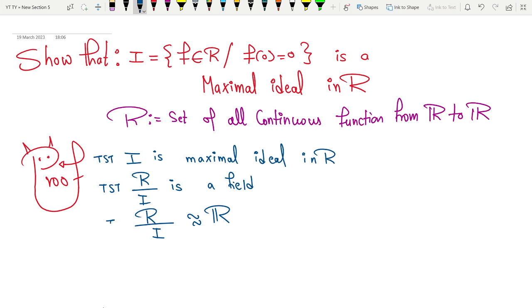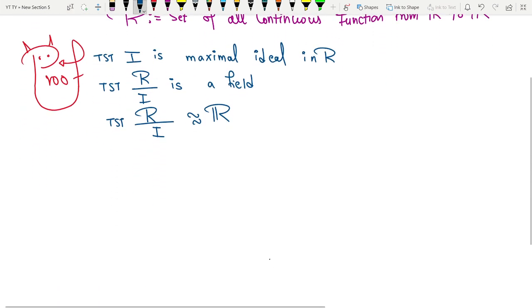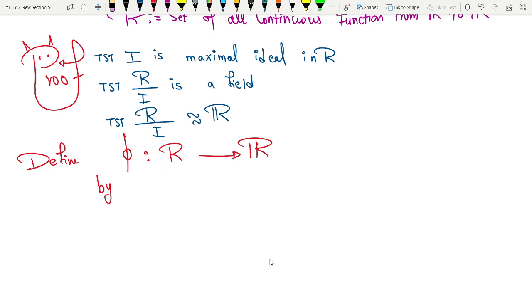For that I will show this. Now as soon as I see this, the first isomorphism theorem strikes my head. I will define a map φ from R to ℝ (not f because we are using f inside). What is R? R is the collection of all continuous functions from real numbers to real numbers. So I define φ(f) = f(0). Now, as the way we have defined, students can easily prove this.